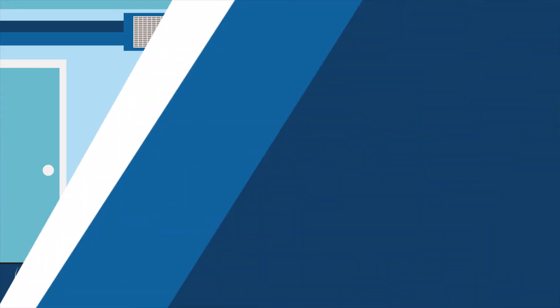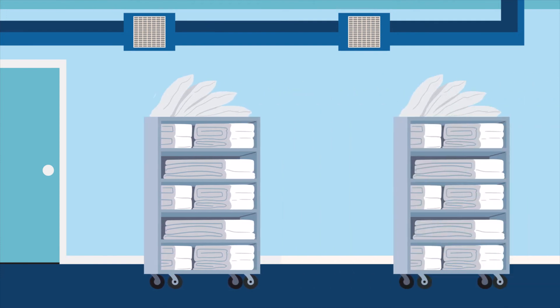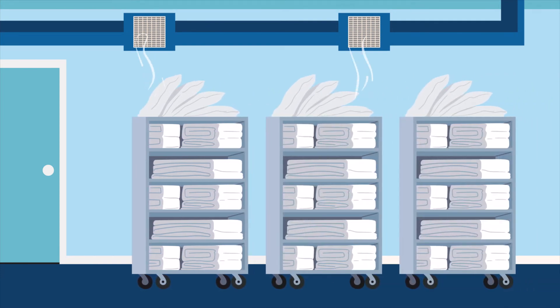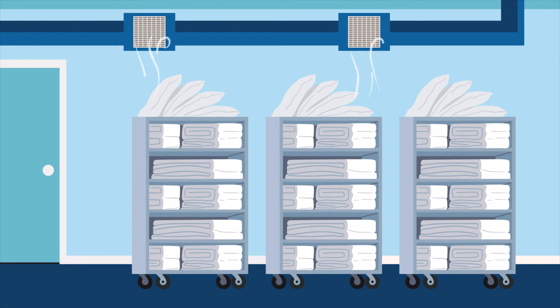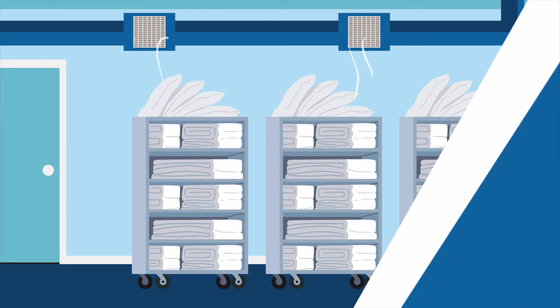On the other hand, a clean linen room has positive airflow, pushing the cleaner air out of the room and preventing air coming in from other spaces. This makes sure any germs in the air outside don't come into the room.